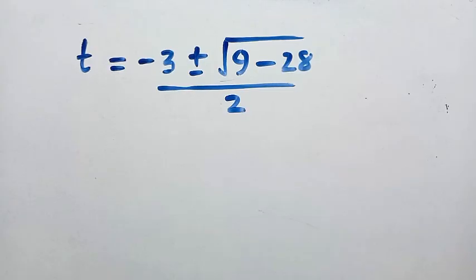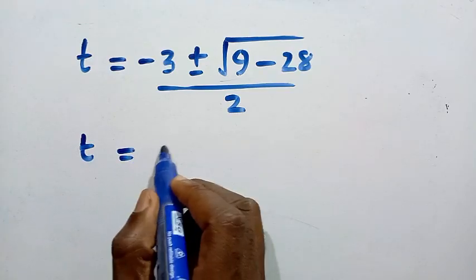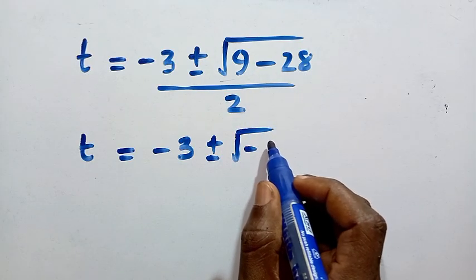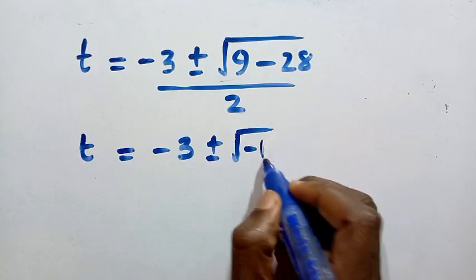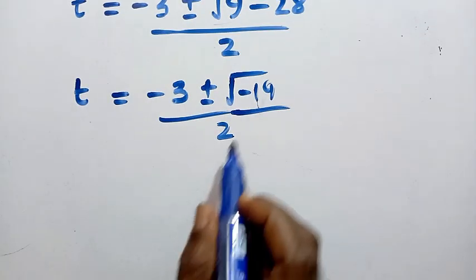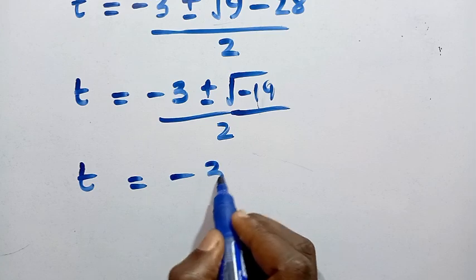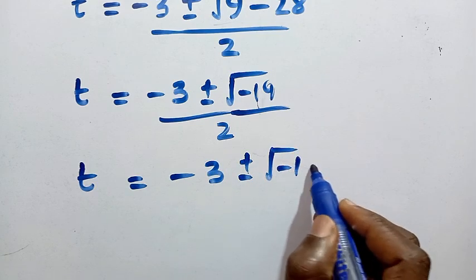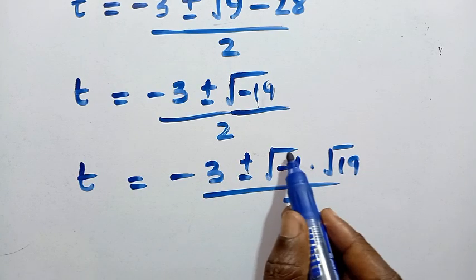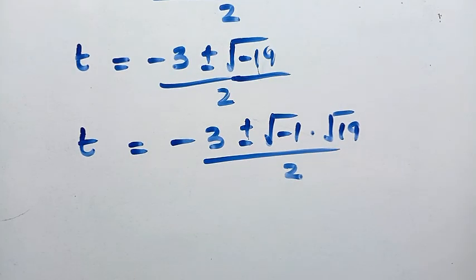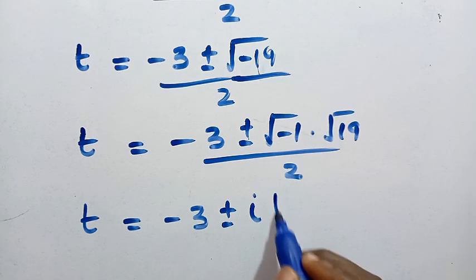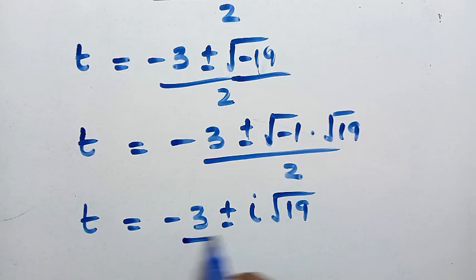Since the square root of minus 19 involves the square root of negative 1, which is the imaginary unit i, we write the result as t equals minus 3 plus or minus i times the square root of 19, all divided by 2. These are complex (non-real) solutions.